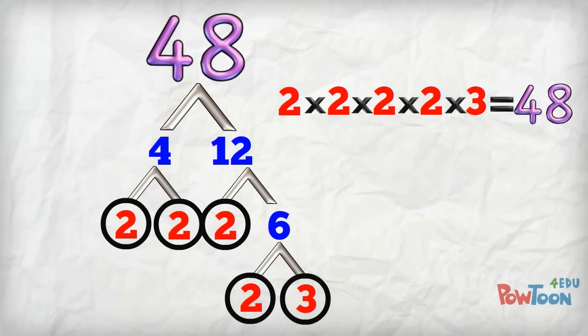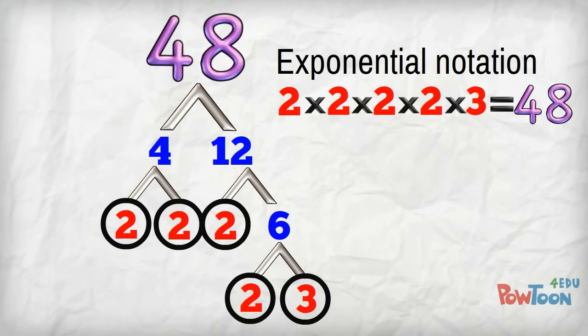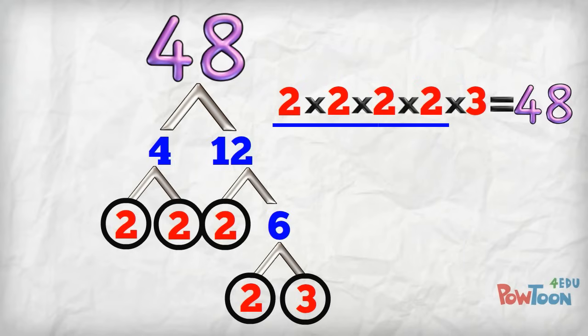And for a great final answer, we use our exponential notation to tidy up those repeated factors. 2 came up 4 times, so we say 2 to the power 4 times 3 is 48. And that's all you need to do!